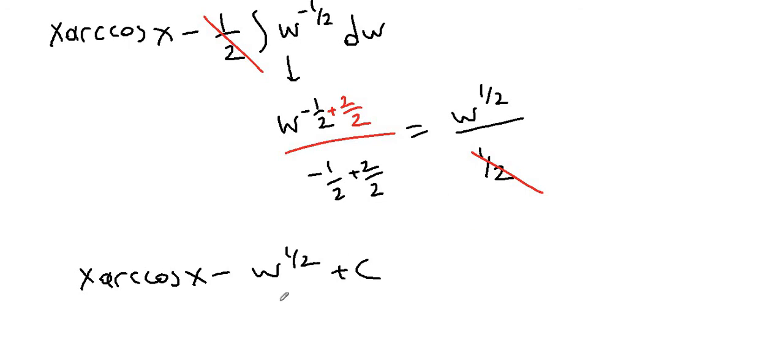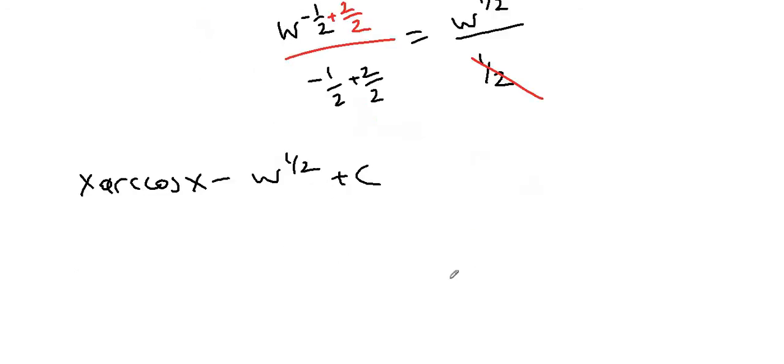plus c. Let's bring our w back. Our w was one minus x squared, and to the power of one half means square root. So, x arccos of x minus square root of one minus x squared plus c. This is our answer.